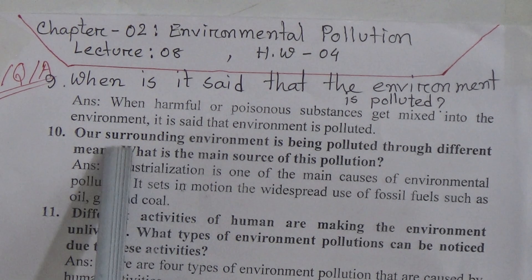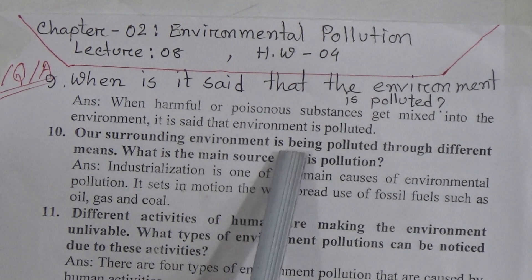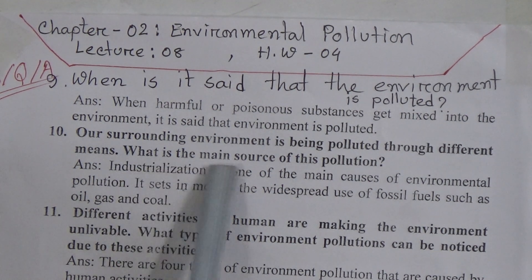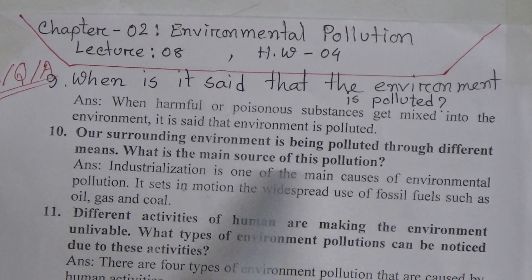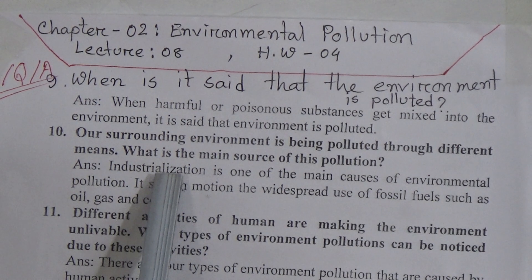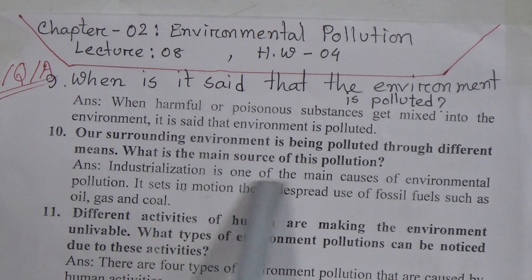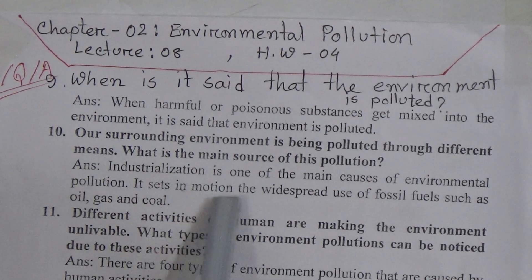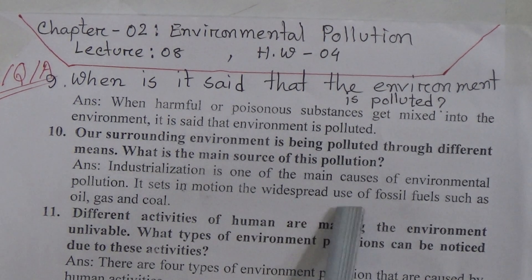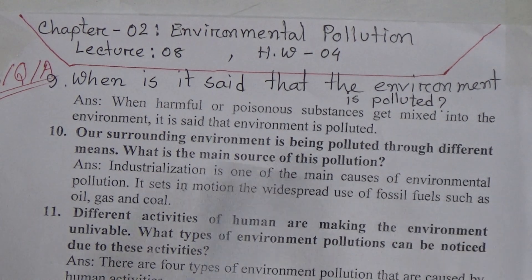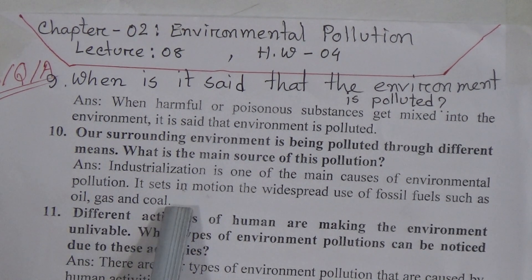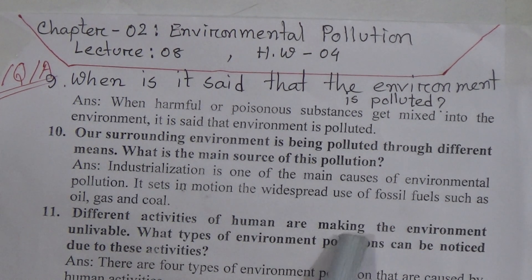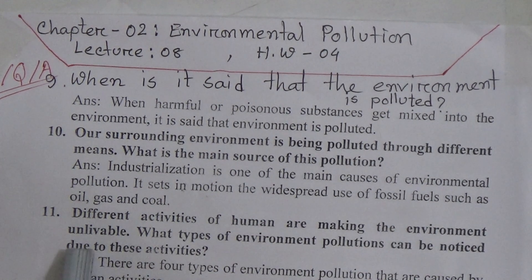Question number 10: our surrounding environment is being polluted through different means — what is the main source of this pollution? The answer is: industrialization is the main cause of environmental pollution. It sets in motion the widespread use of fossil fuels such as oil, gas, and coal.